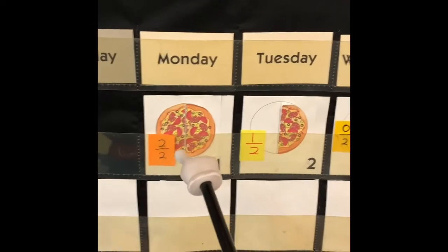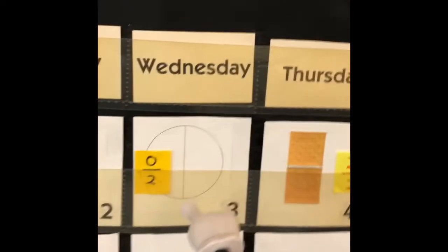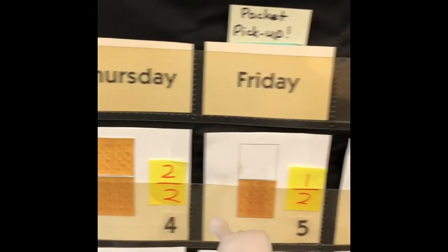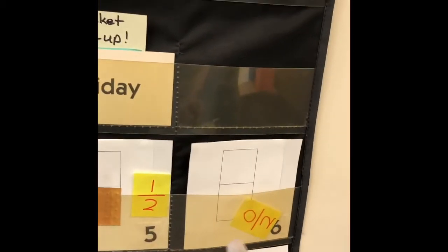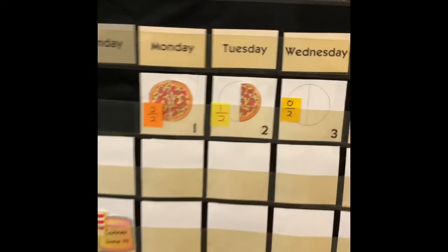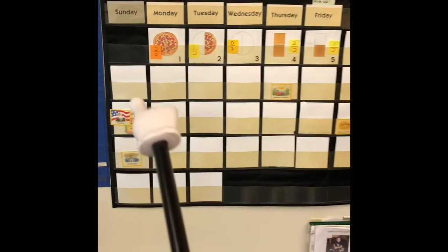So our pattern is two halves, one half, zero halves. Two halves, one half, zero halves. What do you predict we will see tomorrow? We'll see you tomorrow.